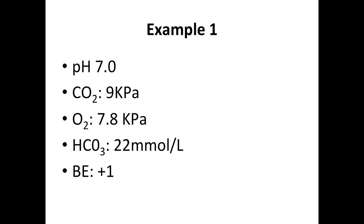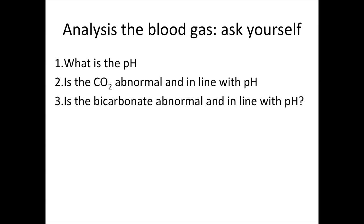Now we are going to look at the first example. Regarding base excess: if there is a negative base excess, it indicates that additional alkali is needed to neutralise an acid. The oxygen level can be helpful for the respiratory status of the patient, but is not actually needed to establish whether the patient has a respiratory or metabolic acidosis or alkalosis. So ask yourself these three questions: what is the pH? Is the carbon dioxide abnormal and in line with the pH? Is the bicarbonate abnormal and in line with the pH?